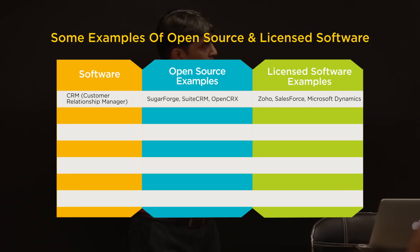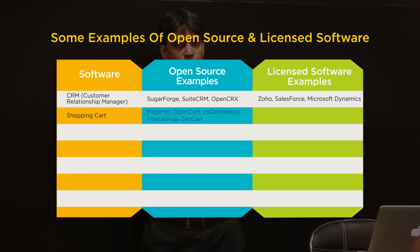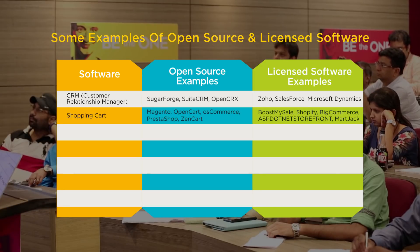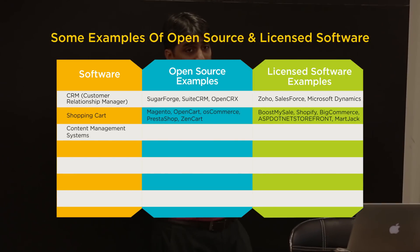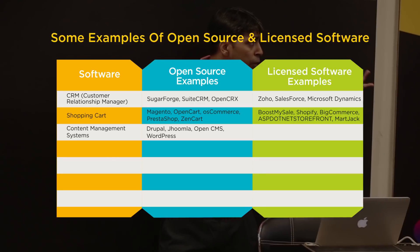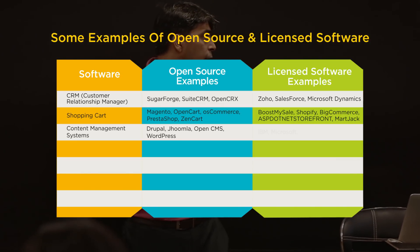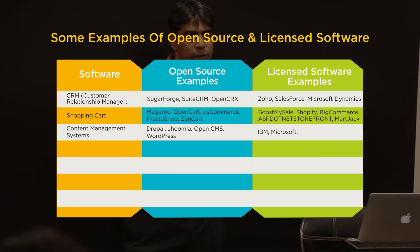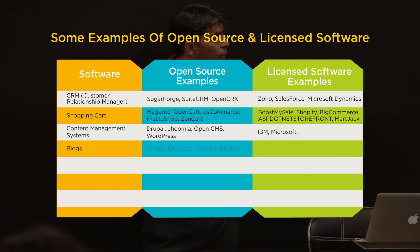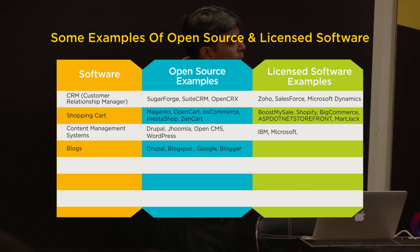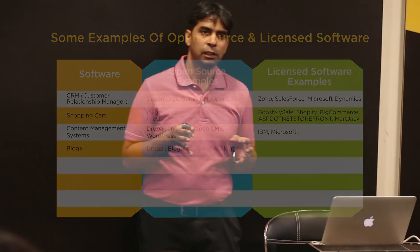Looking at shopping cart, there are examples of open source and licensed. For content management systems — CMS — you've got Drupal, Joomla, OpenCMS, WordPress as open source examples, and IBM and Microsoft in the licensed category. The right side is all the big players — large companies we hear about. The left side is the open source guys.